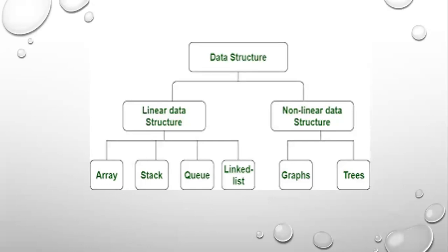In Linear Data Structure, elements are arranged in sequential order. In Non-linear Data Structure, elements are arranged randomly. Examples of Linear Data Structure are Array, Stack, Queue, and Linked List. Examples of Non-linear Data Structure are Graphs and Trees.